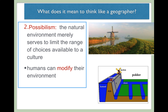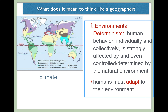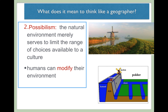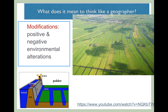Possibilism can be considered more optimistic in terms of humans' ability to modify their environment. Environmental determinism says humans must adapt and have no choice. Possibilism says humans can actually modify their environment. One key example often cited is the polders of the Netherlands, which will be part of your analysis homework questions — to learn what polders are and how the Netherlands, a country below sea level, was able to effectively modify its environment.